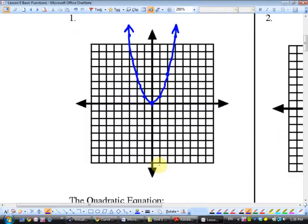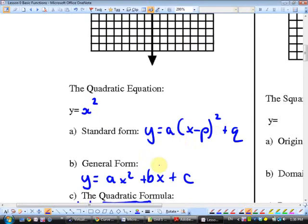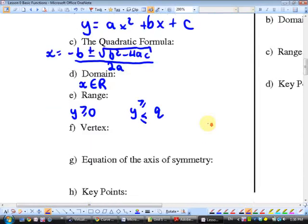Vertex. What's the vertex of this particular parabola? Okay, let's do that one generic. The vertex is p, q. And if there are no numbers in those locations, it's 0, 0.